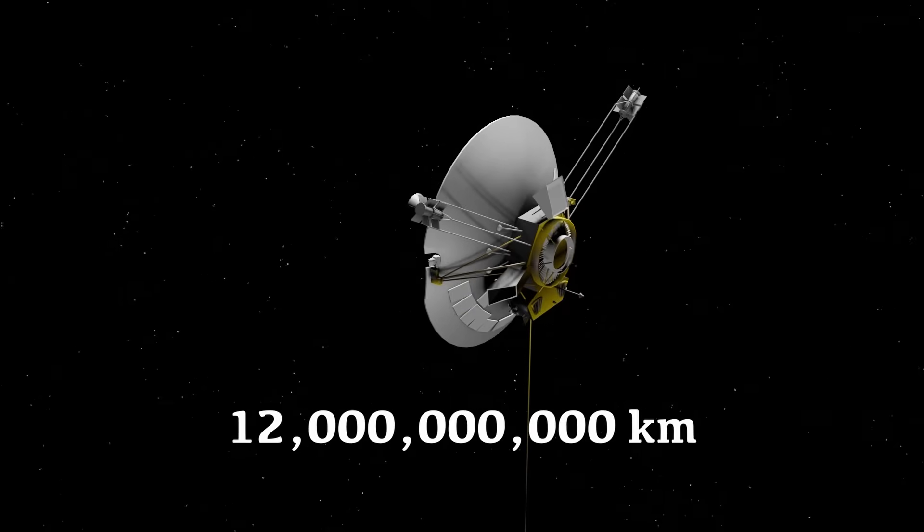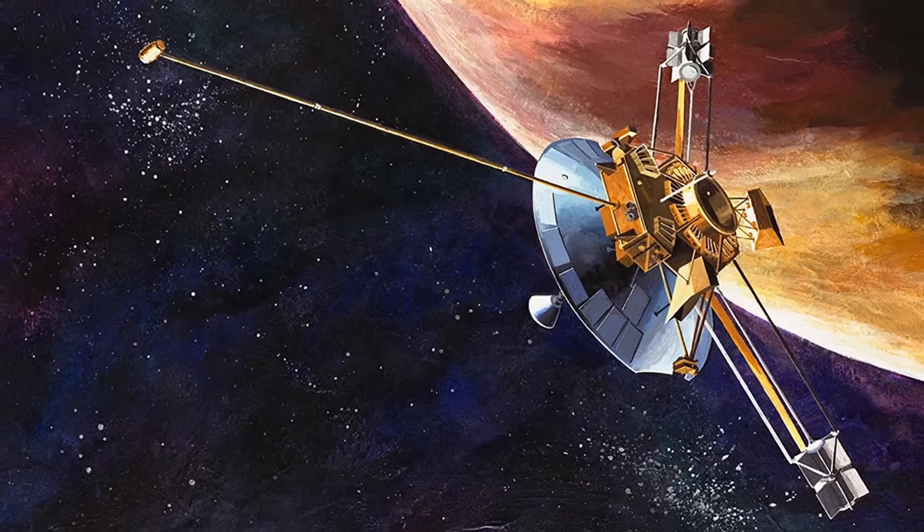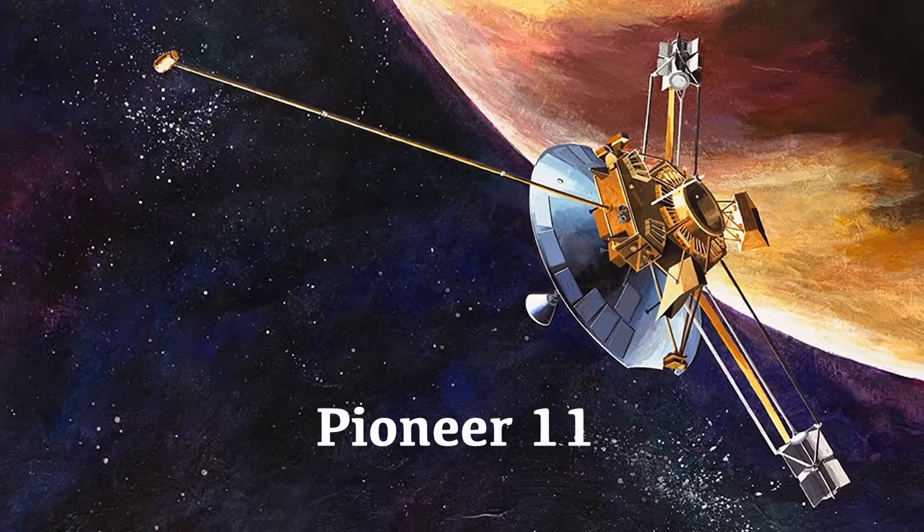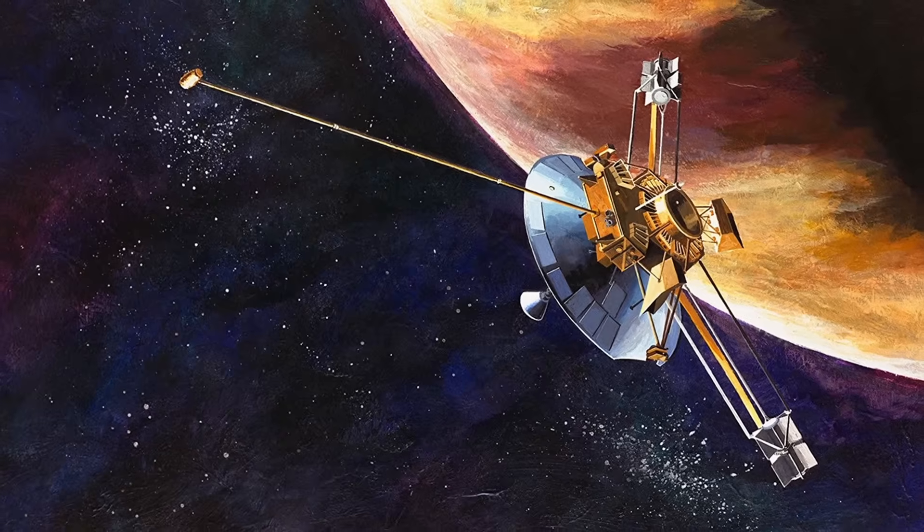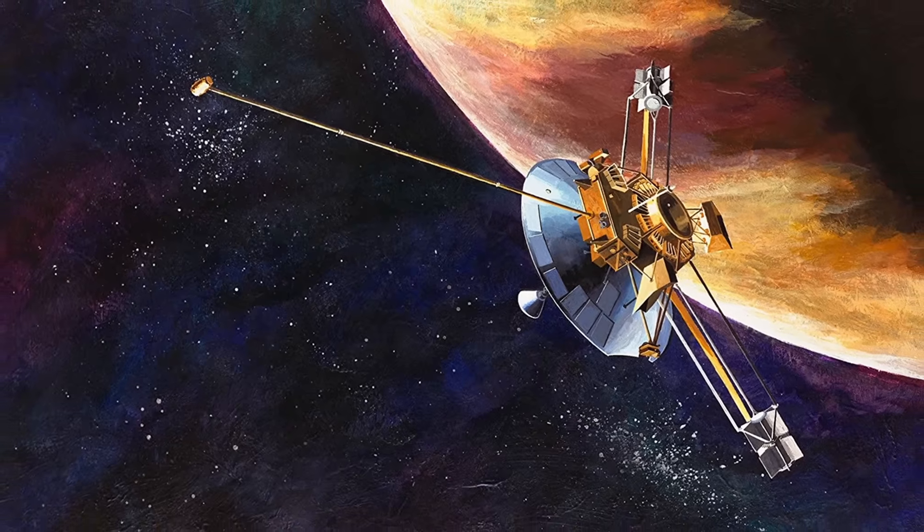So for reference, the next stellar system Alpha Centauri is four light years away, or 40 trillion kilometers away. So we didn't break much distance at all. The second plaque was launched a year later on Pioneer 11, which went to study the asteroid belt, Jupiter, and then Saturn. Pioneer 11 was the second of five artificial objects to leave our solar system. And similarly, we also lost contact with it, but in 1995, so even earlier.